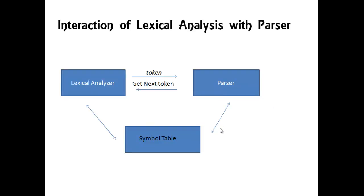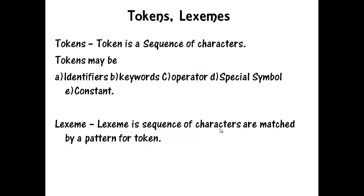Interaction of lexical analysis with parser: The lexical analyzer produces a token and passes it to the parser. Upon receiving a get-next-token command from the parser, the lexical analyzer reads the input characters until it can identify the next token. The symbol table module interacts with all the phases of the compiler.